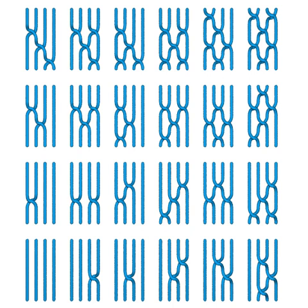Closed Braids. When X is the plane, the braid can be closed — i.e., corresponding ends can be connected in pairs — to form a link, i.e., a possibly intertwined union of possibly knotted loops in three dimensions. The number of components of the link can be anything from 1 to n, depending on the permutation of strands determined by the link. A theorem of J.W. Alexander demonstrates that every link can be obtained in this way as the closure of a braid.